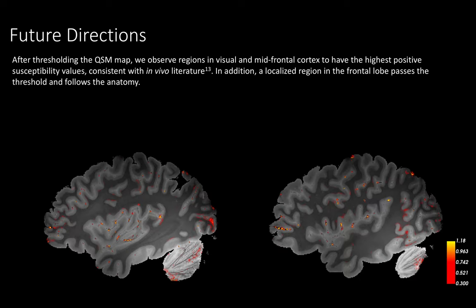This slide shows two sagittal slices of the magnitude image with a QSM map thresholded at 0.3. When we threshold the QSM we observe expected areas of high susceptibility such as in the visual cortex and mid-frontal regions. We also see a localized region in the frontal lobe which passes the threshold and follows the anatomy.